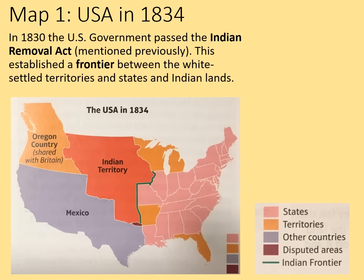In 1830, the US government passed the Indian Removal Act, which we've mentioned previously. This established a frontier between white-settled territories and states on one side and Indian lands on the other. We can see that frontier marked out in green here. This picture is going to change though.